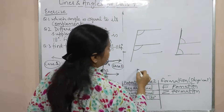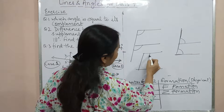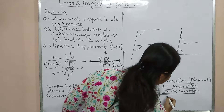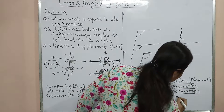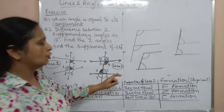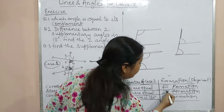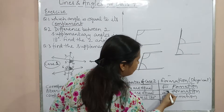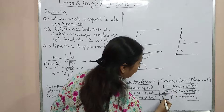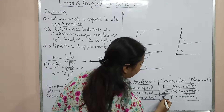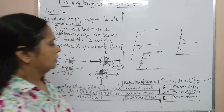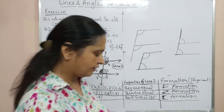The last formation is the C formation. When two lines are cut by a transversal and you see a C shape, the two angles inside the C are co-interior angles. So wherever you see Z → alternate angles, F → corresponding angles, C → co-interior angles. These formations will help you solve difficult questions.